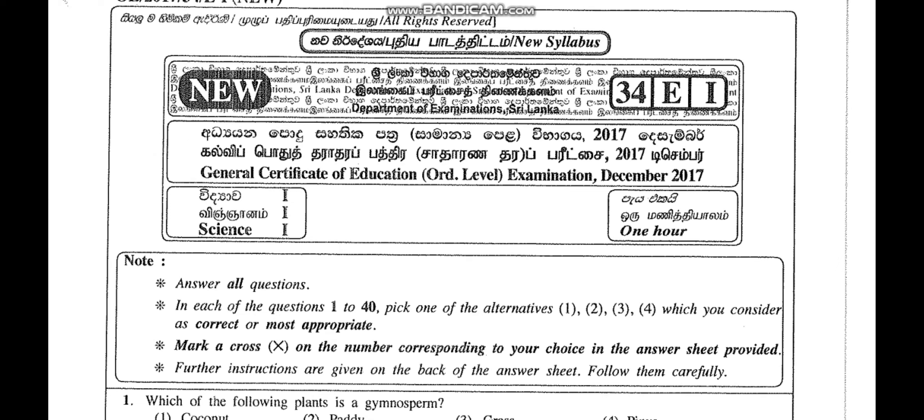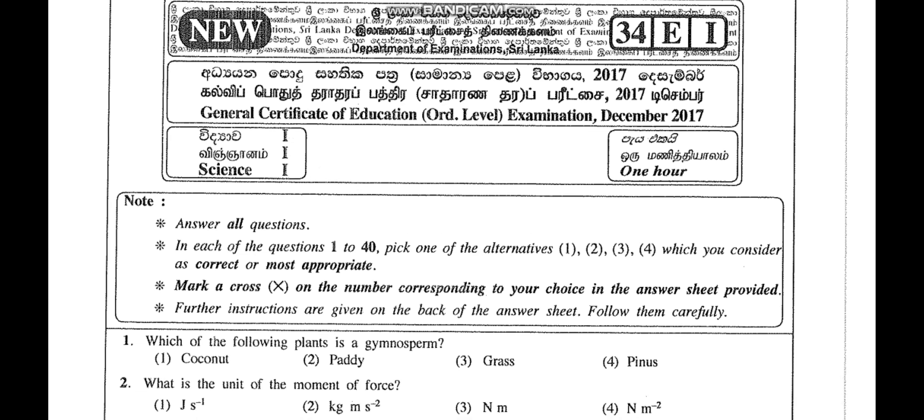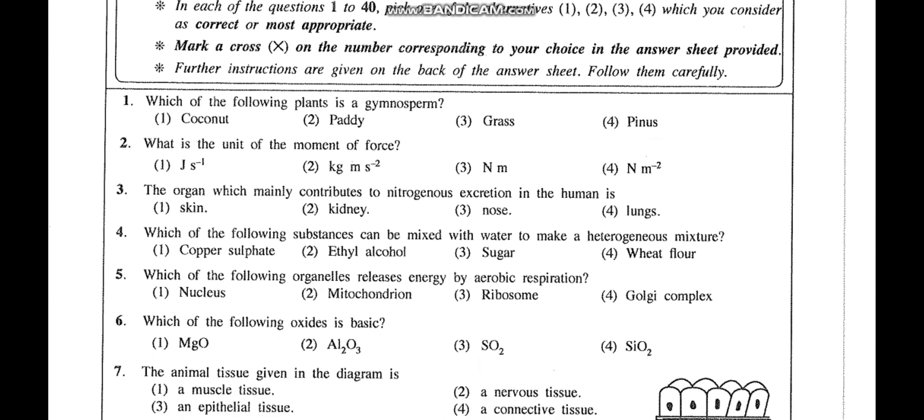Let's start with the first MCQ. There are 40 MCQs and you have to pick one and mark a cross on your MCQ sheet. You have to finish strictly in one hour. This paper will be given separately, not with part two, so you will not have any extra time. Only one hour is given, so you have to manage your time when answering MCQ questions.